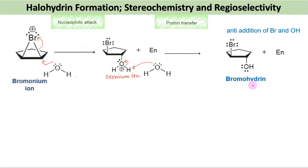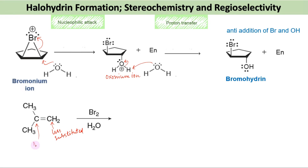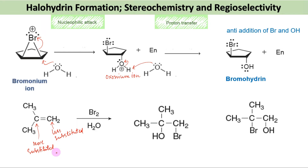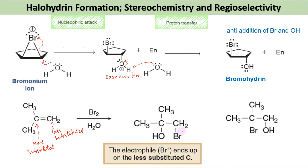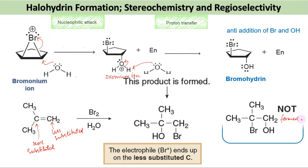In most cases, halohydrin formation is observed to be a regioselective process. Consider this unsymmetrical alkene — this is the less substituted end, and this is the more substituted end. The addition occurs as per our extended Markovnikov statement: the electrophile Br+ adds to the less substituted end, and the hydroxyl group adds to the more substituted end. Thus this product is formed, whereas this one is not observed.